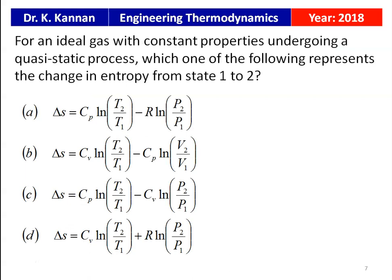Also from the 2018 question paper: for an ideal gas with constant properties undergoing a quasi-static process, which of the following represents the change in entropy from state 1 to 2? The four options are given, and the correct answer is option A: ΔS = Cp·ln(T2/T1) − R·ln(P2/P1). We will see how this is derived.